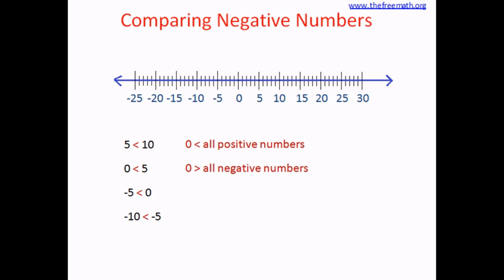The next rule: from 0, the farther you go to the right, the larger the value. So 10 is greater than 5, 20 is greater than 10, and 100 is greater than 20. The farther from 0 on the right you go, the larger the value you get.